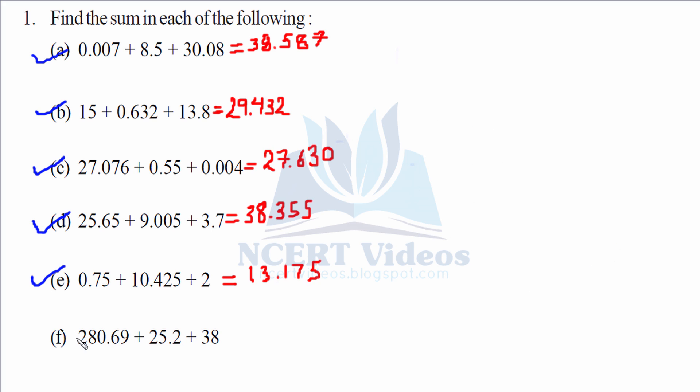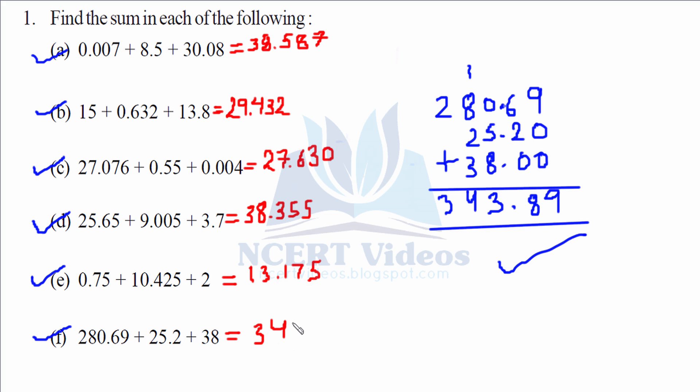Part F: 280.69, 25.20, 0.38. It's a whole number, not a fractional part. So 9, 8, 13, 14. And so it gives 343.89. That makes your question number first.